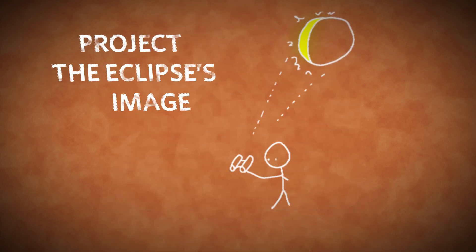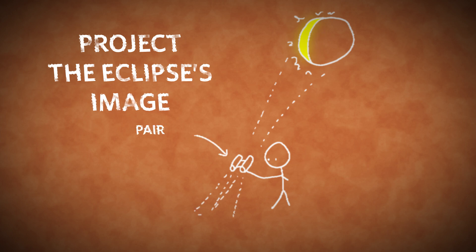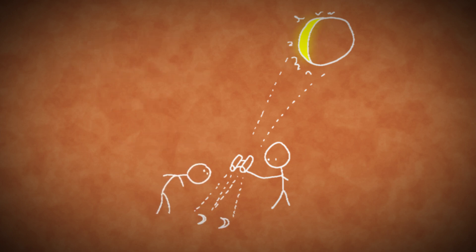The safest way to observe the eclipse is to project its image through either a telescope or a pair of binoculars focused to produce a sharp image. Remember, do not let anyone look through the device at the sun while you're doing this.